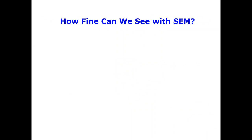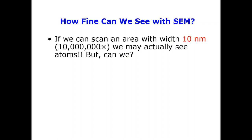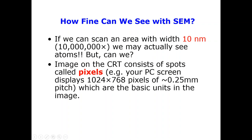We start from the question: how fine can we see with the SEM? For that, we have to consider a width of 10 nanometers in our scan, which corresponds to one million times dimension in X. This raises the question: if we can scan an area with this dimension, will we almost be able to see the atom? Can we see the atom with scanning electron microscopy?